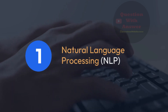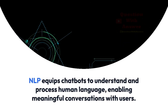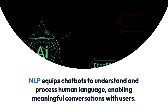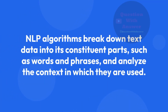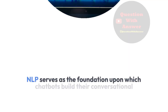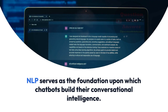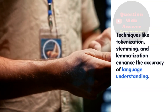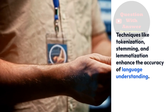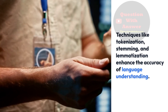1. Natural Language Processing, NLP. NLP equips chatbots to understand and process human language, enabling meaningful conversations with users. NLP algorithms break down text data into its constituent parts, such as words and phrases, and analyze the context in which they are used. NLP serves as the foundation upon which chatbots build their conversational intelligence. Techniques like tokenization, stemming, and lemmatization enhance the accuracy of language understanding.